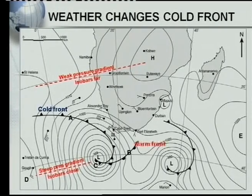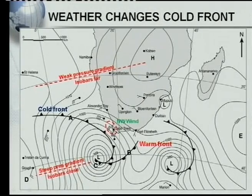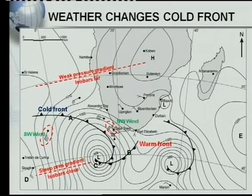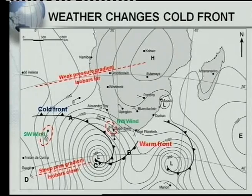Let's look at the weather changes. On the synoptic weather map we can see one very important change that takes place. Here we've got our cold front and the warm front. Have a look at Cape Town — we can see a northwesterly wind blowing at Cape Town. In other words, in front of the front we've got a northwesterly wind. If we look at what's happening behind the front, we see a southwesterly wind. In other words, as a front moves over a place or a town, the wind direction will change from northwest to southwest. That's one of the most important weather changes that take place when a cold front moves over an area.